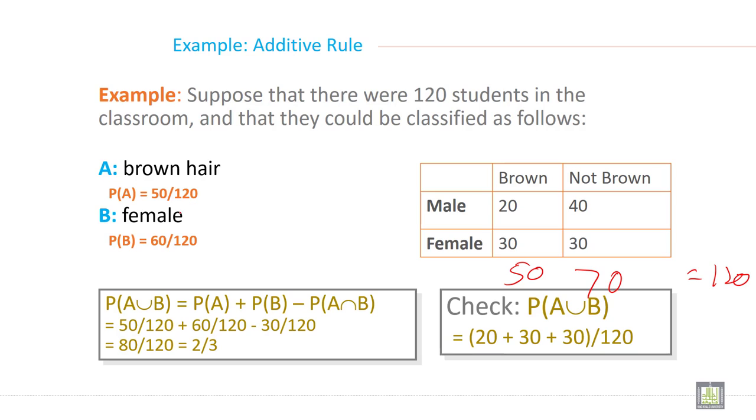And probability of B is 60 divided by 120 for female. So total female is 60 and total male is 60.